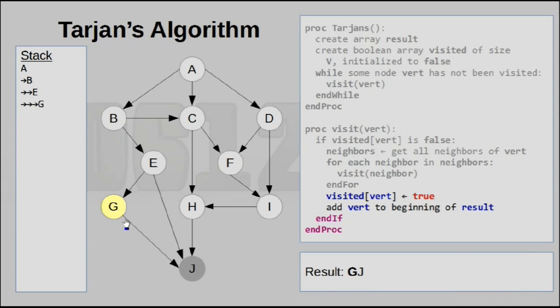So anyway, now that we are done with G, we can backtrack once again to the node E. Now E no longer has any other edges to visit, since it's just visited G, it's just visited J, and it's basically done. So we mark it as visited, and we add E to the result.